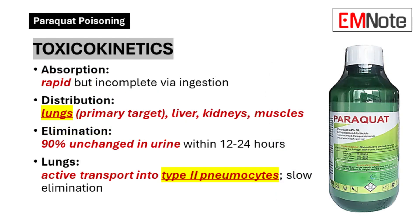Toxicokinetics. The toxicokinetic profile of paraquat is marked by rapid but incomplete gastrointestinal absorption following ingestion. Upon entering the bloodstream, paraquat undergoes extensive distribution to various organs, with preferential accumulation in pulmonary tissue, hepatic parenchyma, renal tissue, and skeletal muscle.